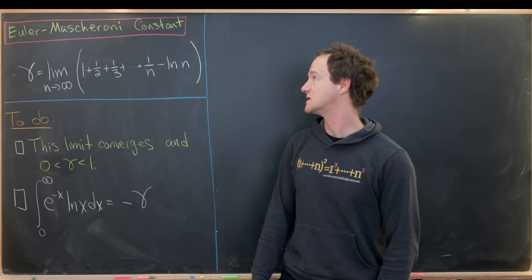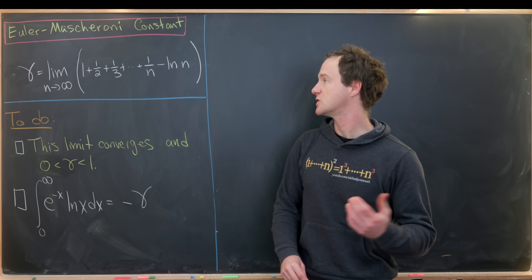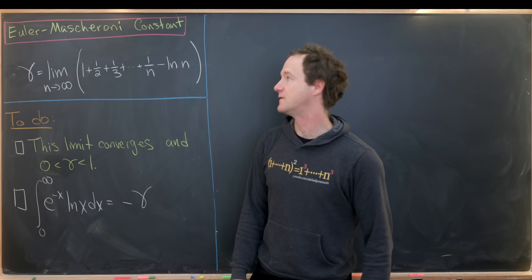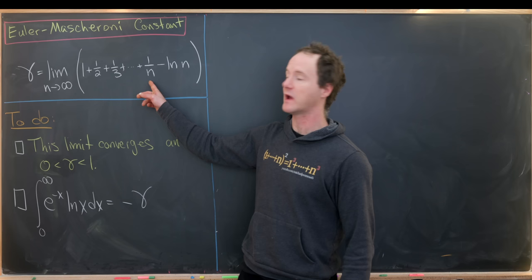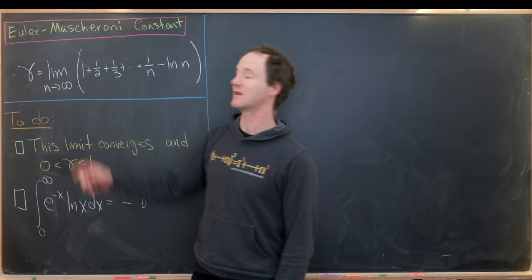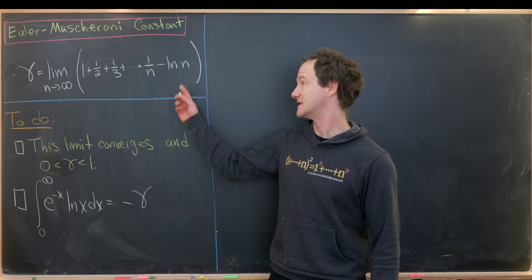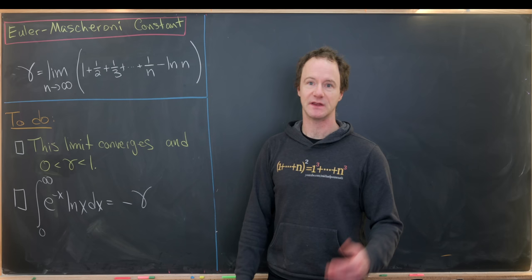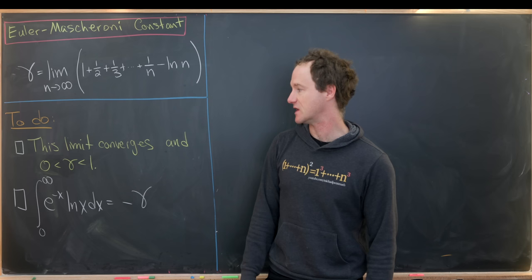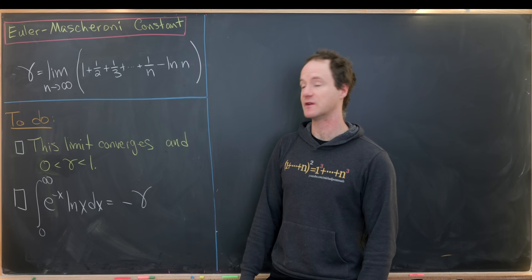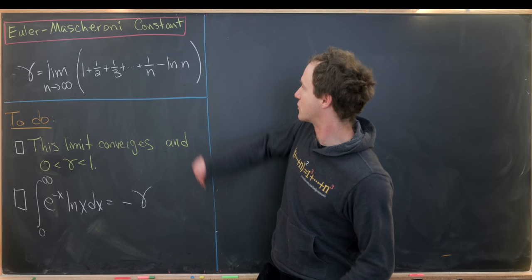Here we're going to explore the Euler-Mascheroni constant, defined via the following limit: the limit as n goes to infinity of 1 plus one-half plus one-third, all the way up to 1/n, minus the natural log of n. It's generally denoted by the letter gamma. We're going to show two things: first, that this limit converges, and we'll show it converges to a number between 0 and 1. Then we'll prove an integral identity for this constant.